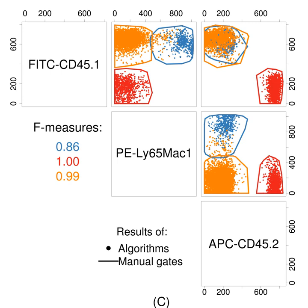Flow cytometers operate by hydrodynamically focusing suspended cells so that they separate from each other within a fluid stream. The stream is interrogated by one or more lasers, and the resulting fluorescent and scattered light is detected by photomultipliers. By using optical filters, particular fluorophores on or within the cells can be quantified by peaks in their emission spectra. These may be endogenous fluorophores such as chlorophyll or transgenic green fluorescent protein, or they may be artificial fluorophores covalently bonded to detection molecules such as antibodies for detecting proteins, or hybridization probes for detecting DNA or RNA.